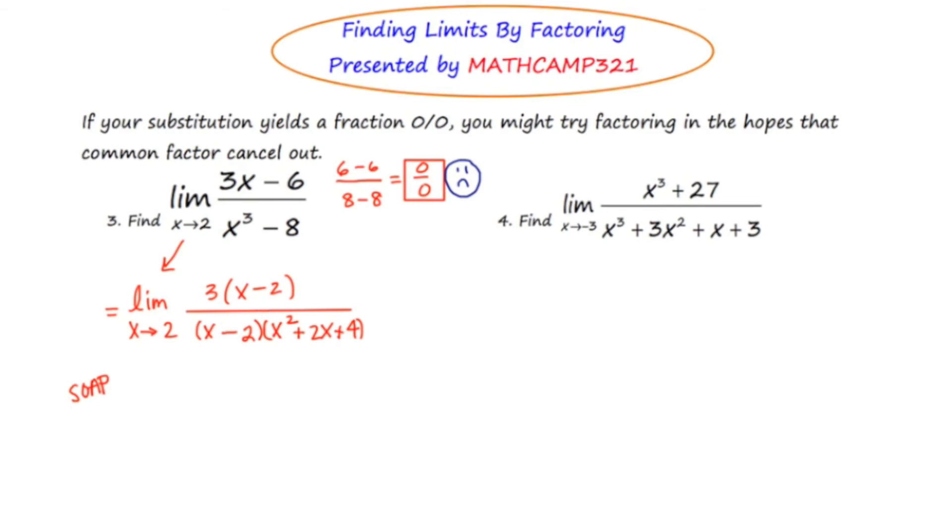So in doing this factoring, you'll notice that there is a common factor, x minus 2. So I'm going to go ahead and cross those out. Now when I substitute the 2 in, hopefully I won't end up with 0 over 0. So the top is just 3. There's nothing to really do there, so I'll just write 3. Now on the bottom, I've got 2 squared or 4, 2 times 2, which is 4 again. And then it trails with 4 at the end of the trinomial. So we end up getting 3 over 12, which reduces or simplifies to 1 fourth.